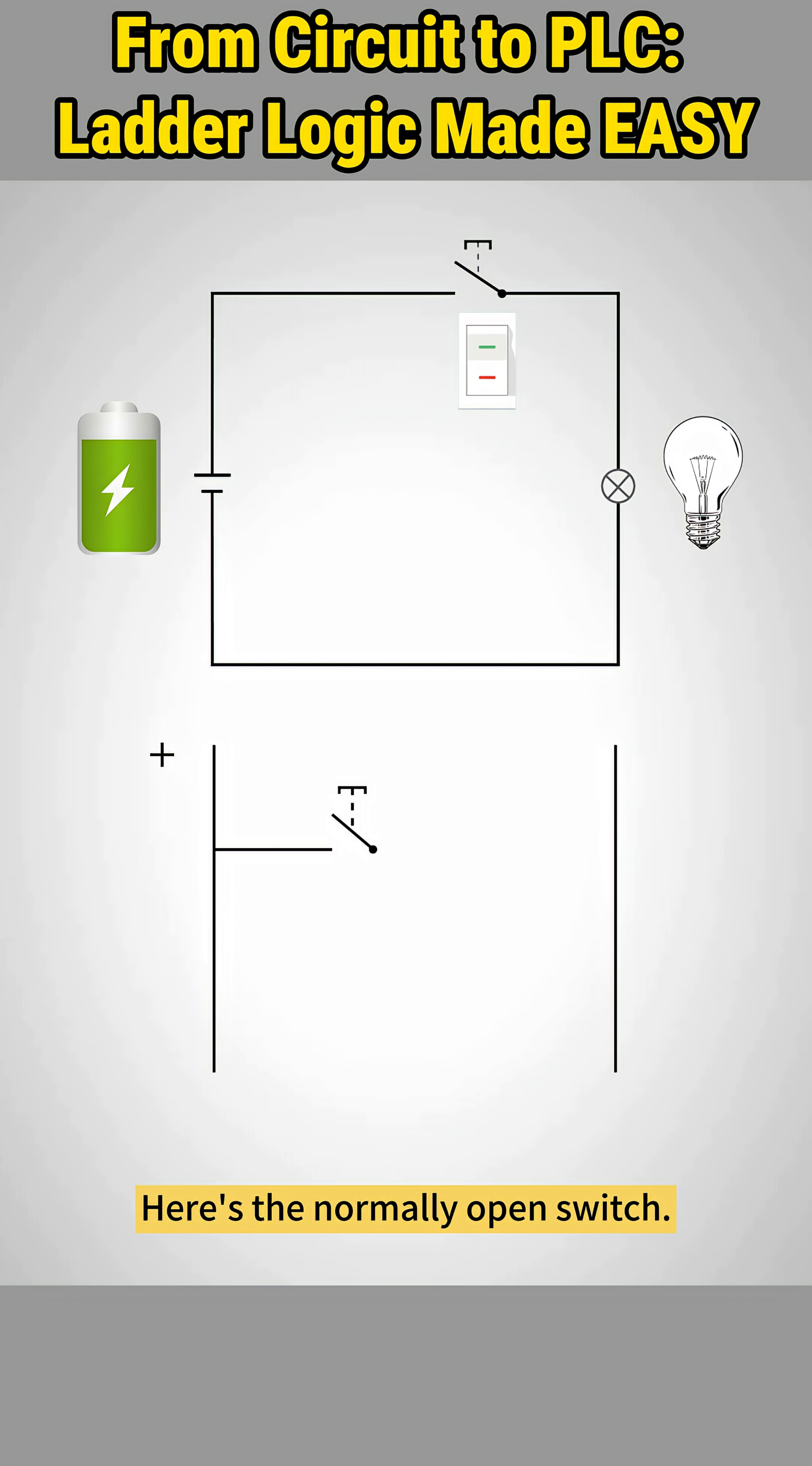Here's the normally open switch. And here's the load coil or bulb. In the ladder logic diagram, the positive and negative terminals are referred to as the left and right power buses. Let's map that to the ladder diagram. This symbol corresponds to the normally open switch, while this symbol matches the load or coil.